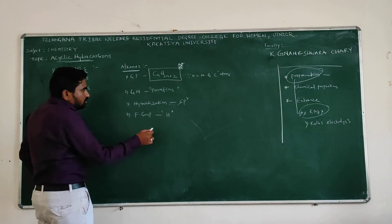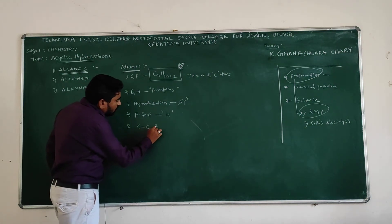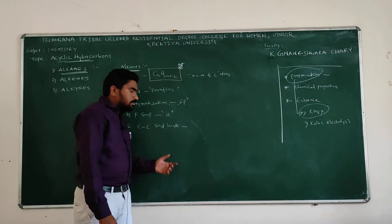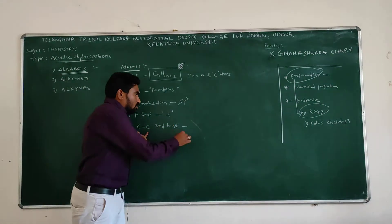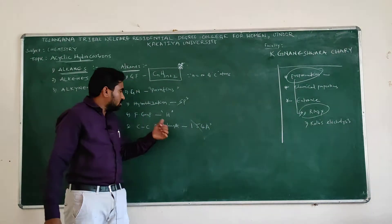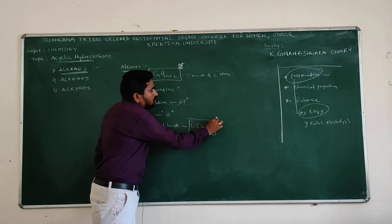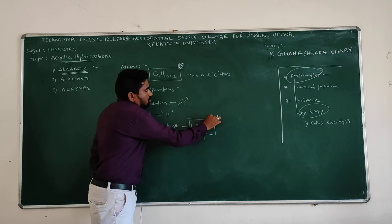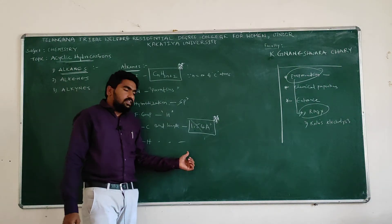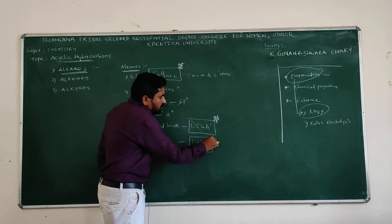Please give your attention here. This is also useful for entrance purposes. What is the carbon-carbon bond length in alkanes? Here it is 1.54 angstroms — angstroms is a unit for bond length. So 1.54 angstroms is the bond length between carbon and carbon. And what is the bond length between carbon and hydrogen? Here 1.09 angstroms is the bond length between carbon and hydrogen.